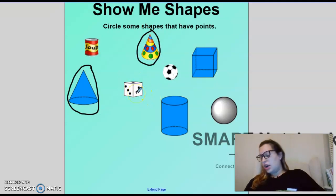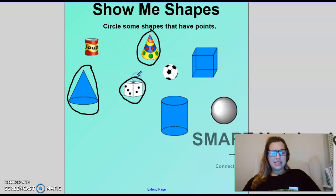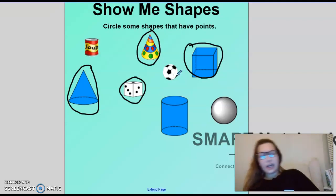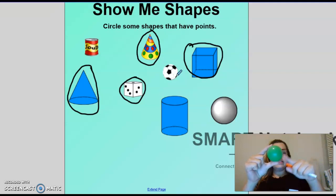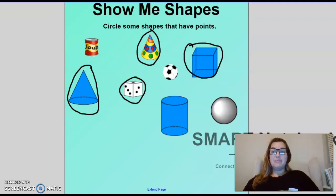Look at this dice or our cube. Are there points on it? Yes, there are. We can circle that too. Now, where's the other cube? Can you point to it on your screen? Over here? No. Is it here? Yes. We can circle that. Look at the soccer ball. Does it have any points? Are there any points on here? No. We circled all the shapes that have points. Great job.